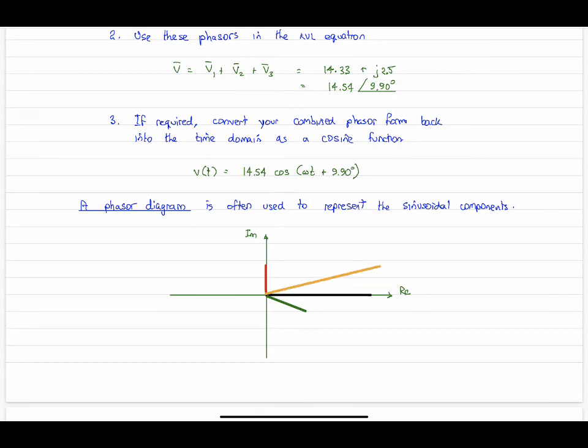Let's label them. This was our resultant, this was our answer: 14.54 at 9.9 degrees. And here are the component vectors. There was V3, which is 5 at 90 degrees. This was V1, which was 10 at 0 degrees. This was V2, which was 5 at minus 30 degrees.